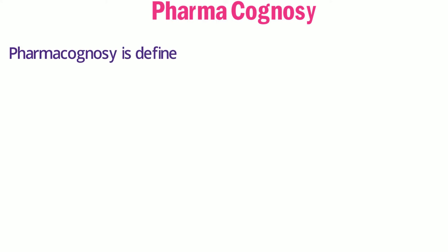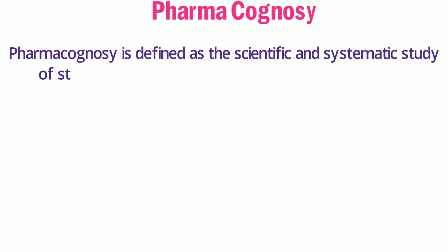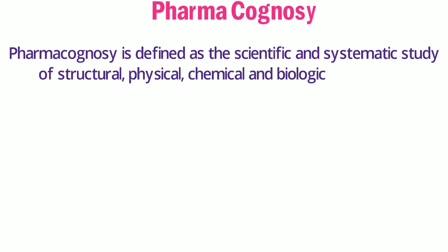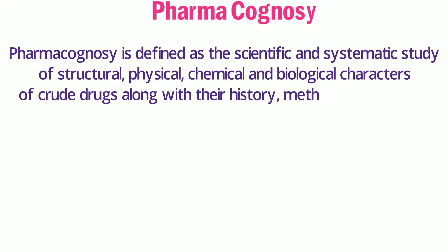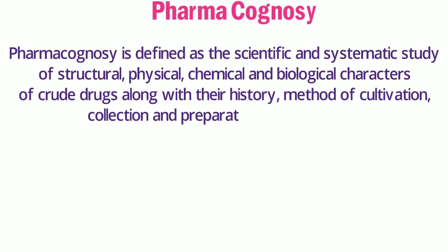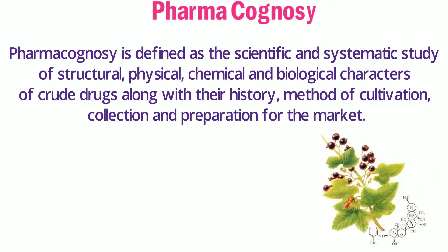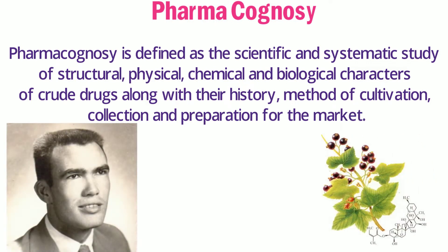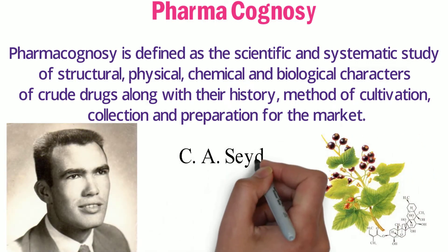Pharmacognosy is defined as the scientific and systematic study of structure, physical, chemical, and biological characters of crude drugs, along with their history, method of cultivation, collection, and preparation for the market. A German scientist C.S. Edler coined the term pharmacognosy in 1815.